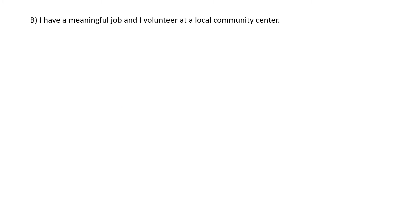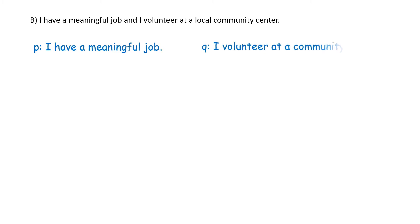Part B: 'I have a meaningful job and I volunteer at the local community center.' Let's assign symbols. Let P be 'I have a meaningful job' and Q be 'I volunteer at a local community center.' That English statement expressed symbolically would be P and Q.